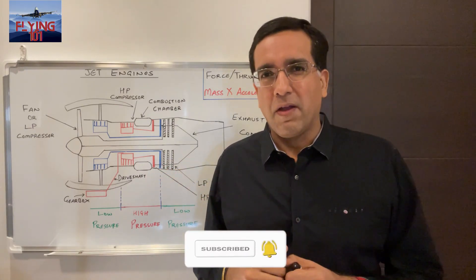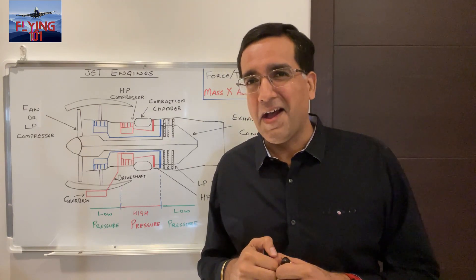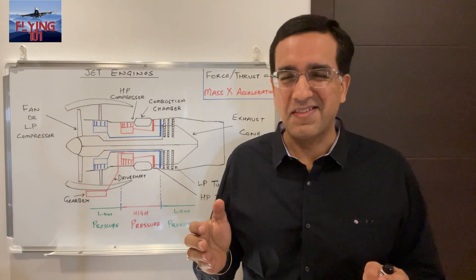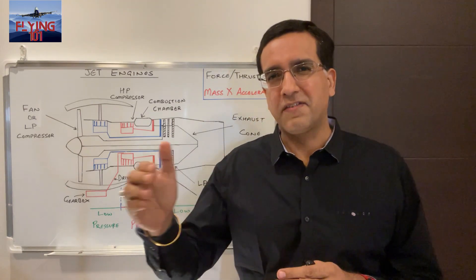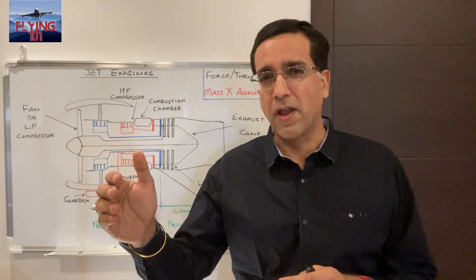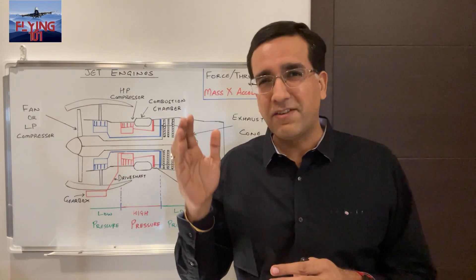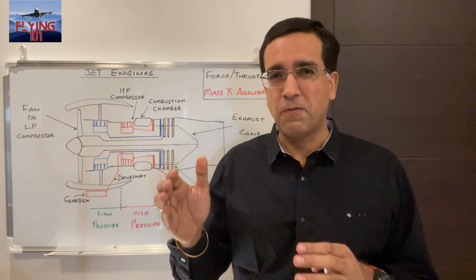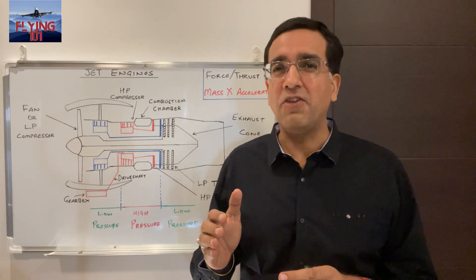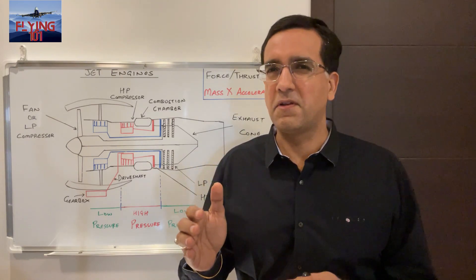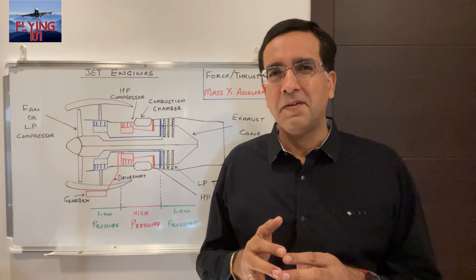In case you're wondering what the difference between velocity and speed is: speed refers to how fast an object is moving, whereas velocity is a vector that refers to the rate at which an object changes direction, so there is direction involved.